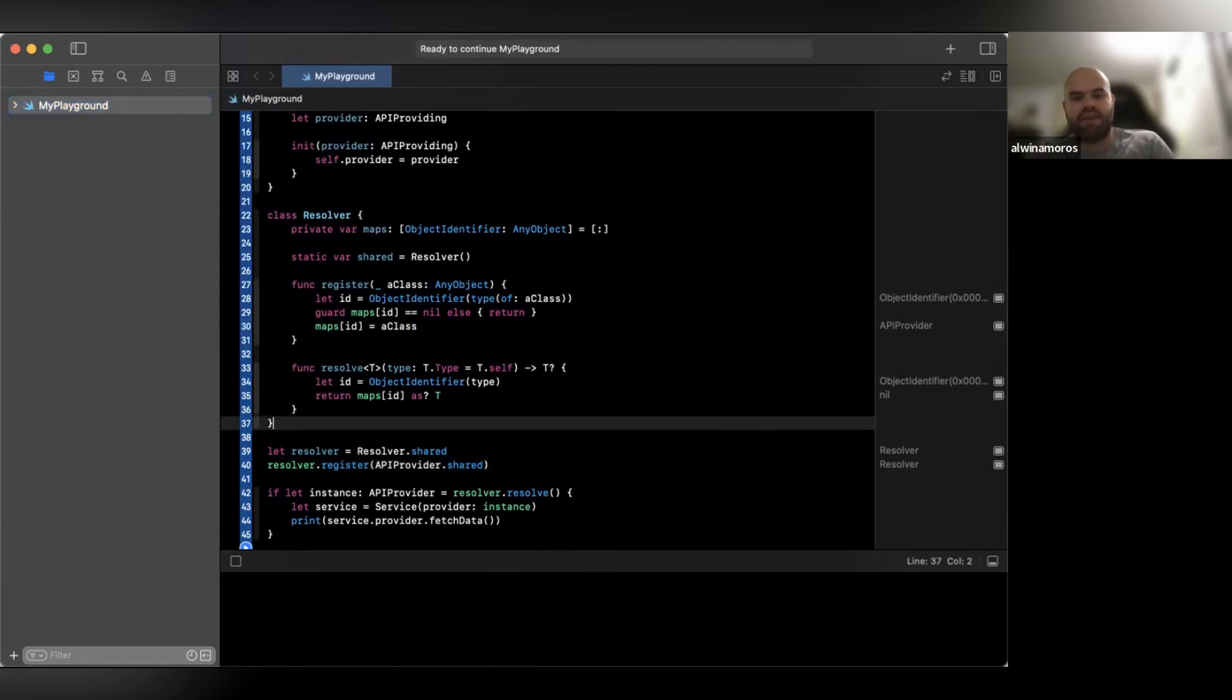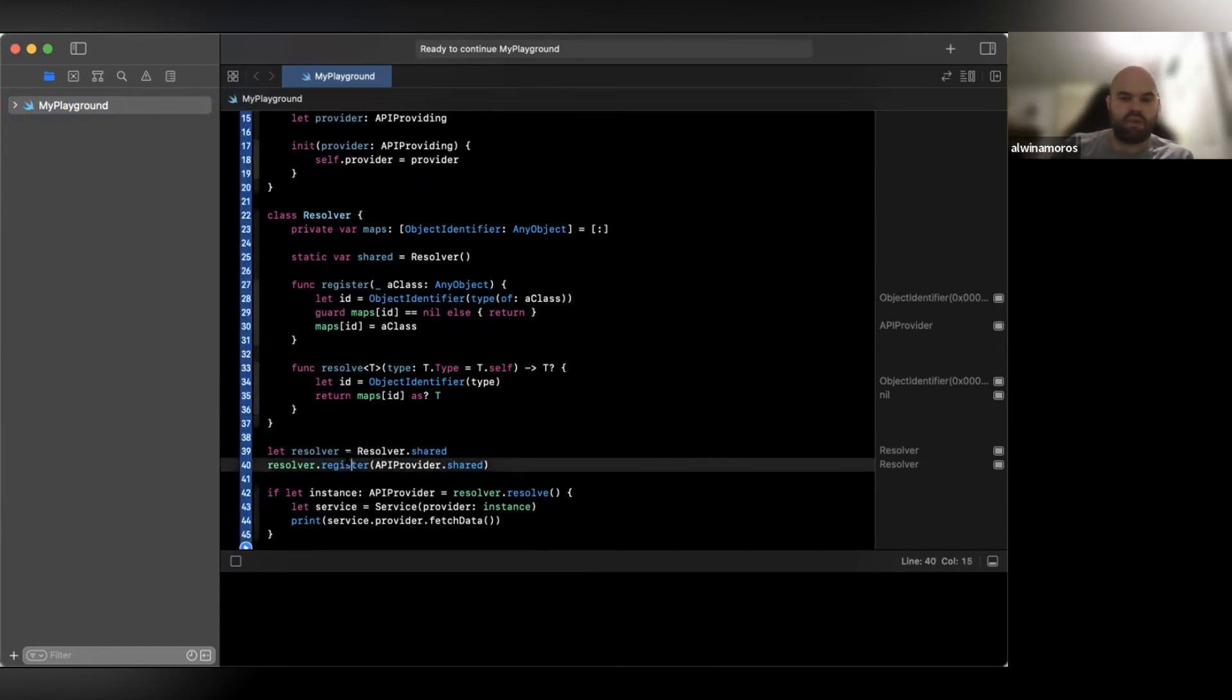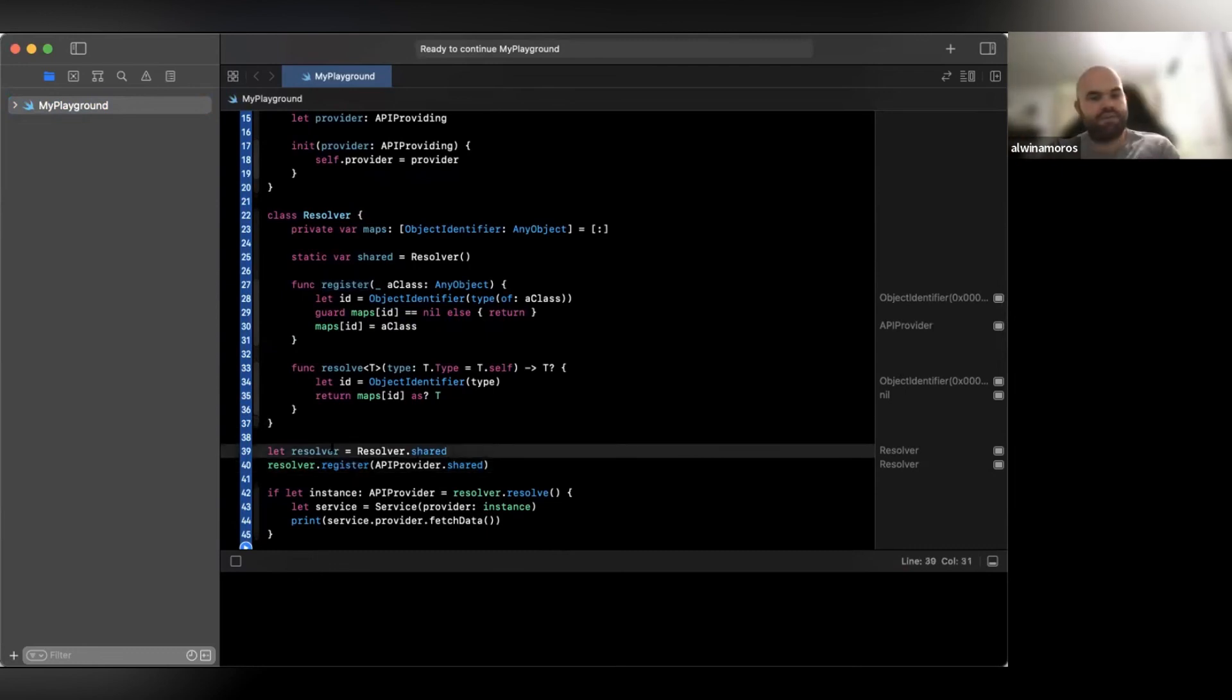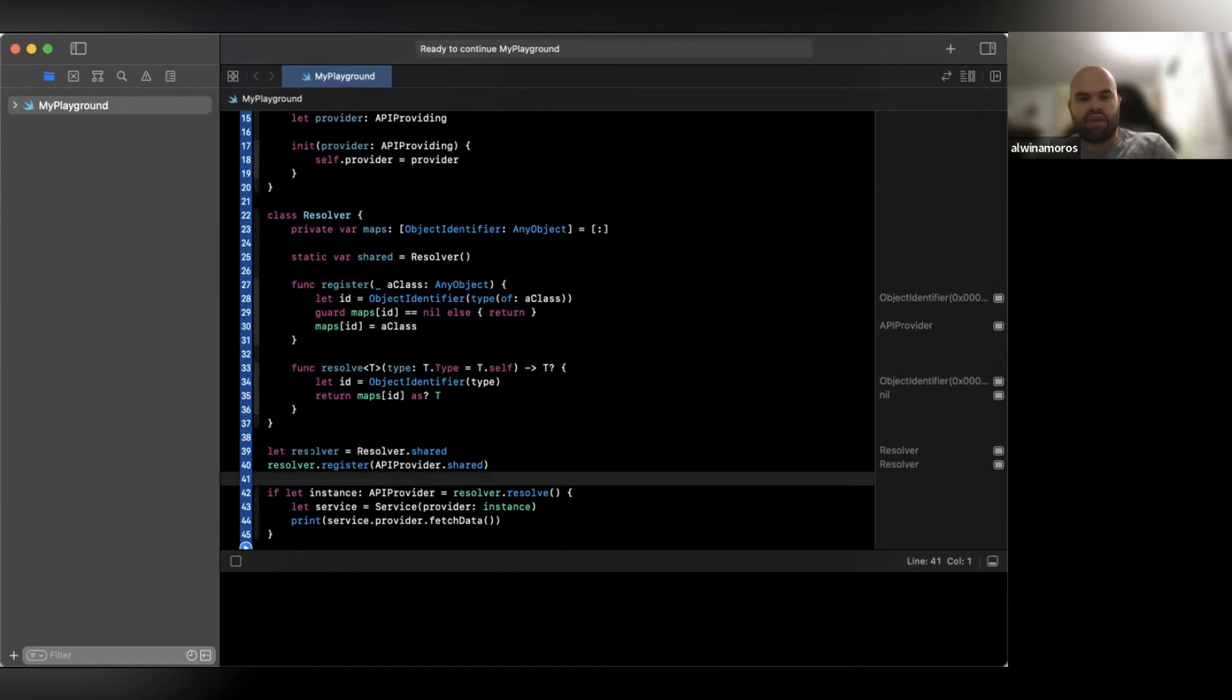And for the resolve, we're going to be passing in the type that we want and getting the object that we need back. So by doing so, we do Resolver.Shared and we're going to instance Resolver. Now to store the class that we, or register the object that we want, we're going to be doing Resolver.RegisterApiProvider.Shared.